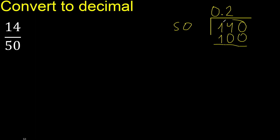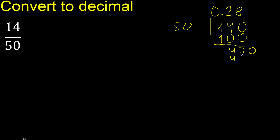100 is not greater. Subtract — 40. There is no number that goes down, therefore complete. Always complete with 0. Point is here only once. 40 becomes 400. 50 multiplied by which number? Multiply by 9 is greater. Multiply by 8 is 400.